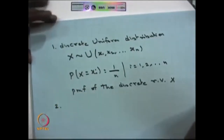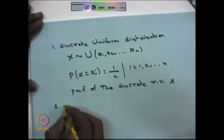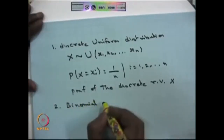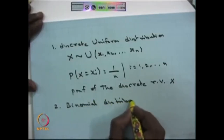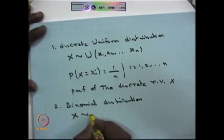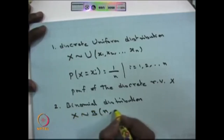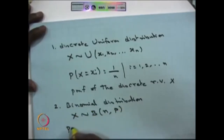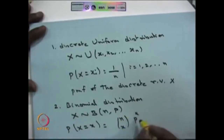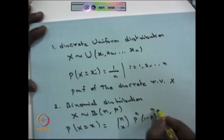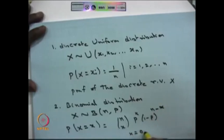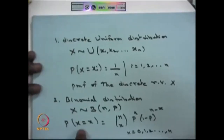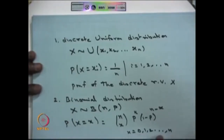The second discrete case is the binomial distribution. When we say the random variable X is binomially distributed with parameters n and p, the probability mass function is nCx * p^x * (1-p)^(n-x), where X takes values from 0, 1, 2, and so on up to n — that means it has n+1 jump points.